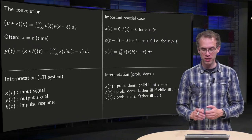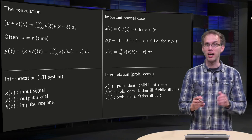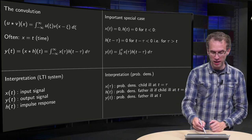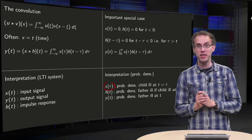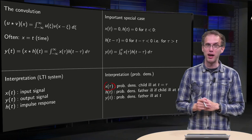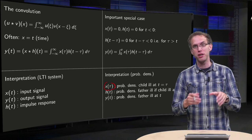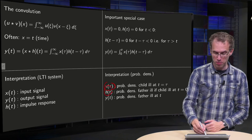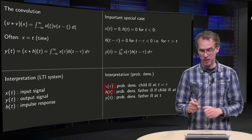also some kind of interpretation in terms of probability densities. Suppose you have a child at school or daycare and all kinds of viruses there, so that x of tau be the probability density that your child is ill at t equals tau. Now of course the child has parents, and suppose now the father only gets ill due to the virus of the child,